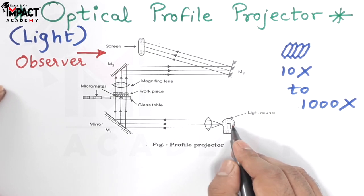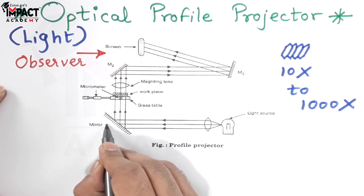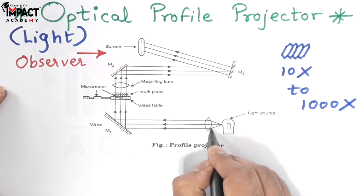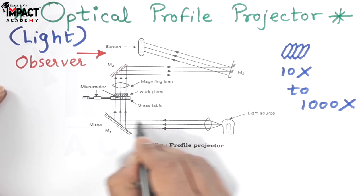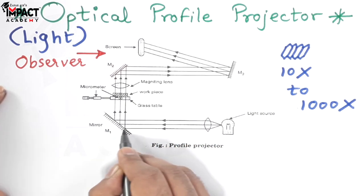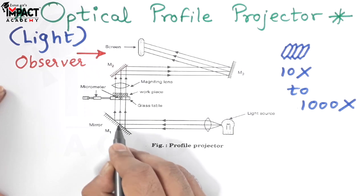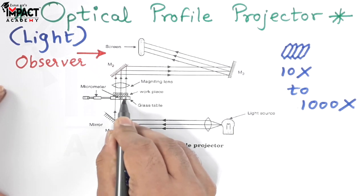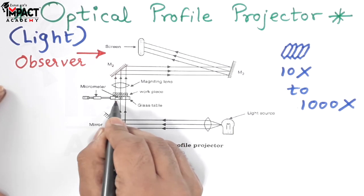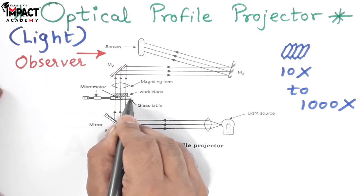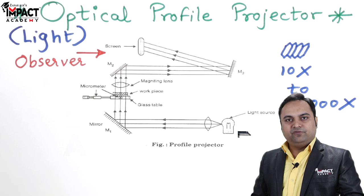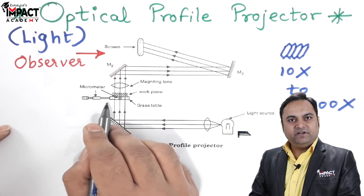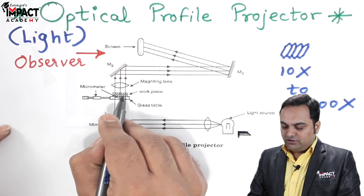The light source projects the light on mirror M1 with the help of this lens. The light is first scattered, then it goes into a singular direction when it hits mirror M1, then it is projected up. Here we have a glass table which is transparent. The workpiece is placed on the table of the profile projector, which is a transparent table through which the light would be passed.